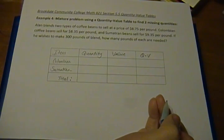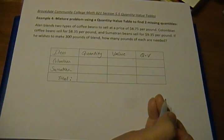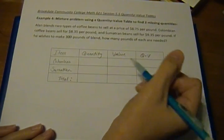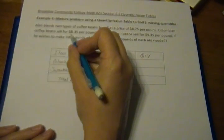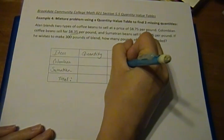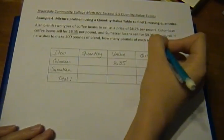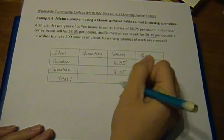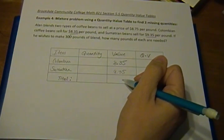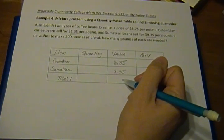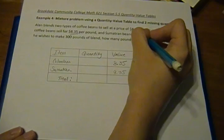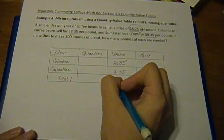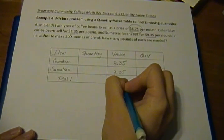So here we need to figure out how many pounds of each we need, so we don't have our quantities yet. We'll fill that in after we fill in our value. Our Colombian is $8.35 per pound, and our Sumatran is $9.35. Now our overall total average, what we want to sell the whole mixed blend of coffee beans, we want to sell it for $8.75 per pound. So this is going to be our overall total average value in the last box in the value column.